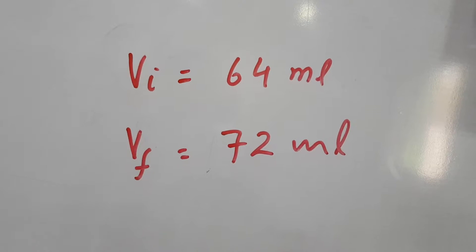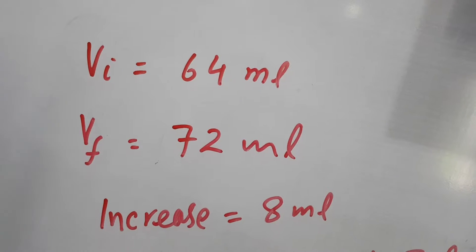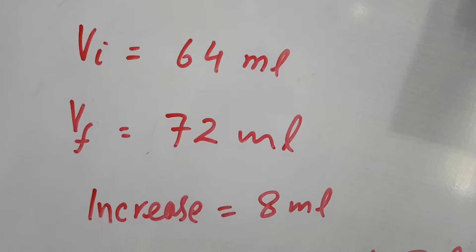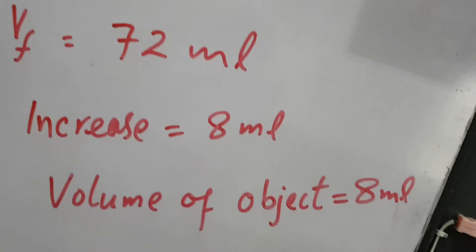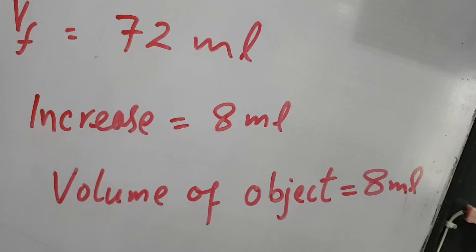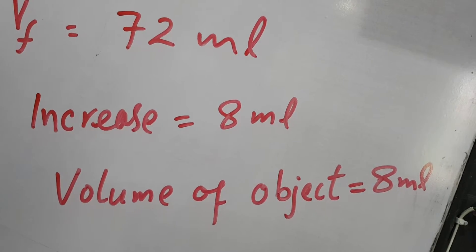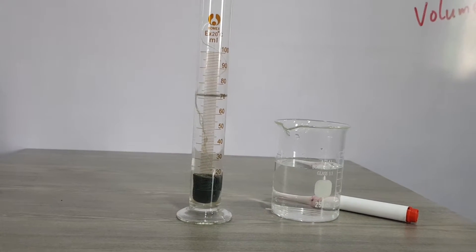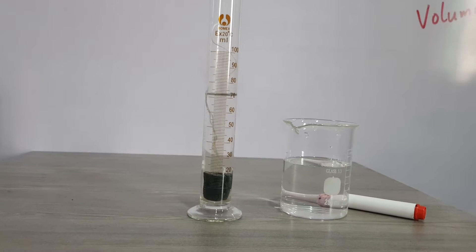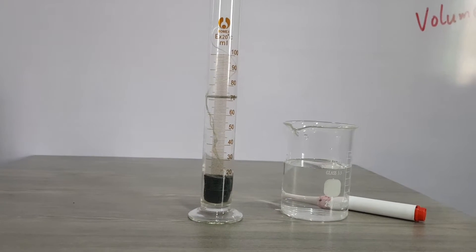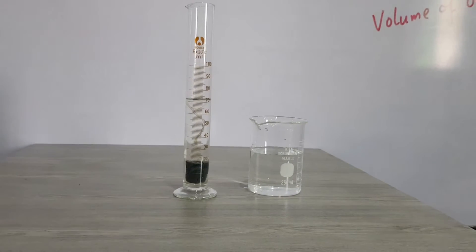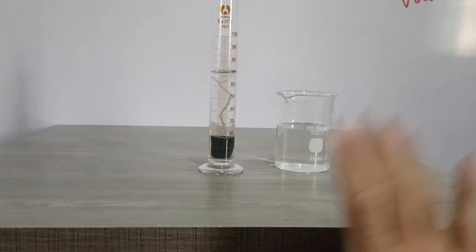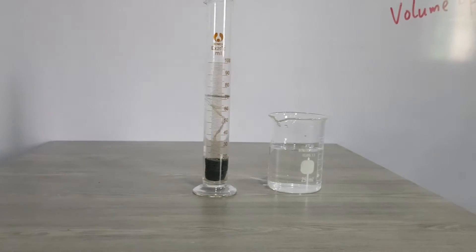How much did the volume increase? 8 ml. This 8 ml is the volume of the object we dipped into the water. You have learned how to find the volume of an irregular shaped object with the help of a measuring cylinder. Some precautions: first, the surface should be plain and leveled, and the cylinder must be kept on a leveled surface vertically.